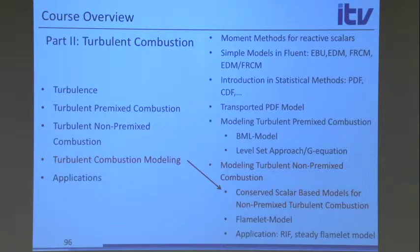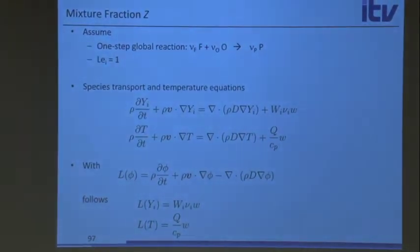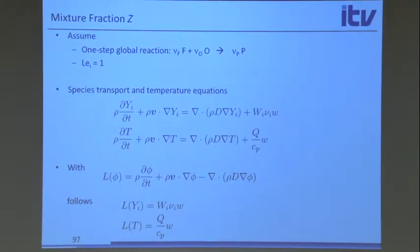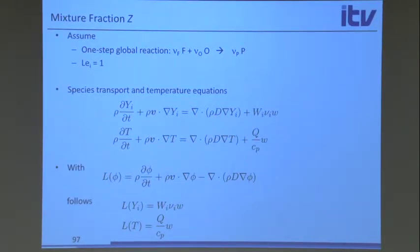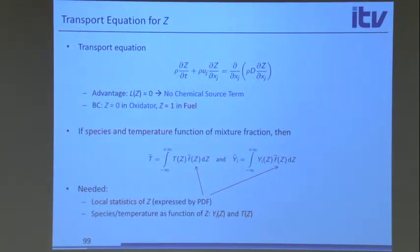My advisor always said non-premixed combustion is easy, so we can go through this relatively quickly. Most of this summarizes what we discussed before. We define the mixture fraction—zero in air and one in the fuel. The modeling approach: if I know the PDF of mixture fraction and know the scalars as a function of mixture fraction, then I can get the mean quantity by integrating. The mixture fraction is the most important parameter.